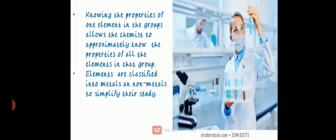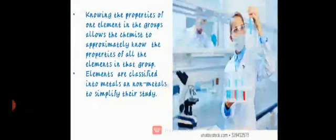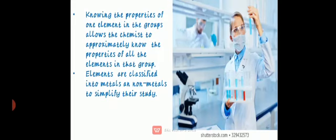Knowing the properties of one element in a group allows the chemist to approximately know the properties of all other elements in the group. If a chemist knows about the property of one chemical or element, she or he also knows the properties of other elements, as all the elements are placed in the periodic table.